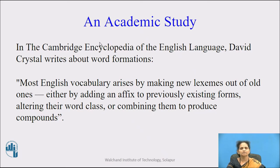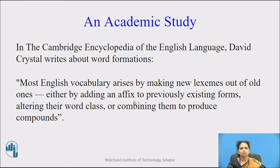Now see the importance of an academic study. In the Cambridge Encyclopedia of the English Language, David Crystal writes about word formation. He has said: 'Most English vocabulary arises by making new words out of old ones, either by adding an affix to previously existing forms, altering their word class, or combining them to produce compounds.'